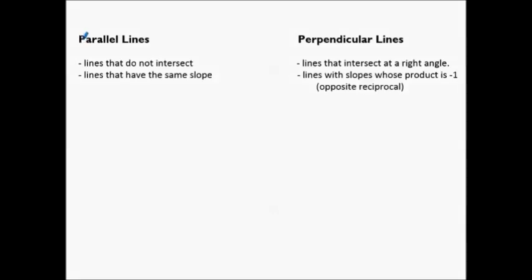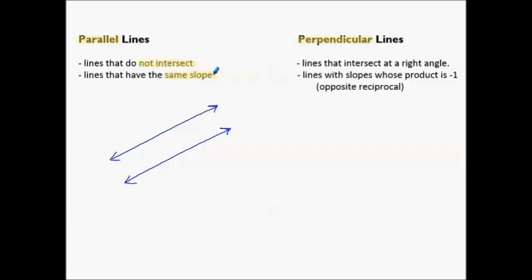We are going to review parallel and perpendicular lines. Parallel lines are lines that do not intersect, so they go in the same direction. An example of parallel lines would be two lines that do not intersect and go in the same direction. These are lines that have the same slope, as you will recall from Algebra 1.